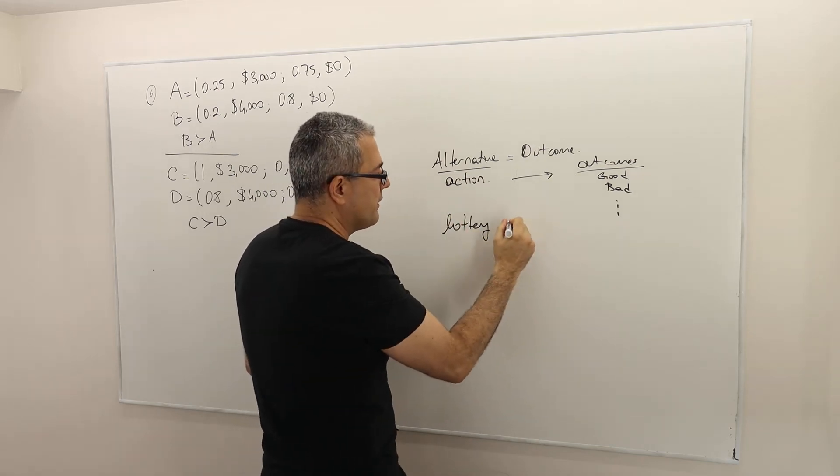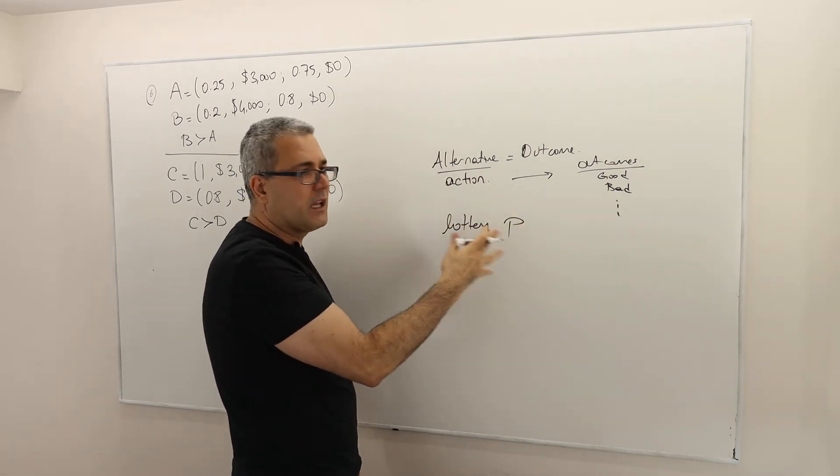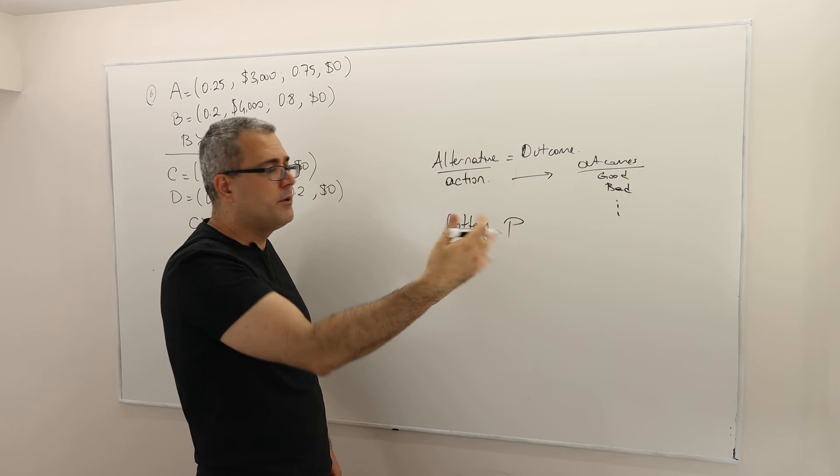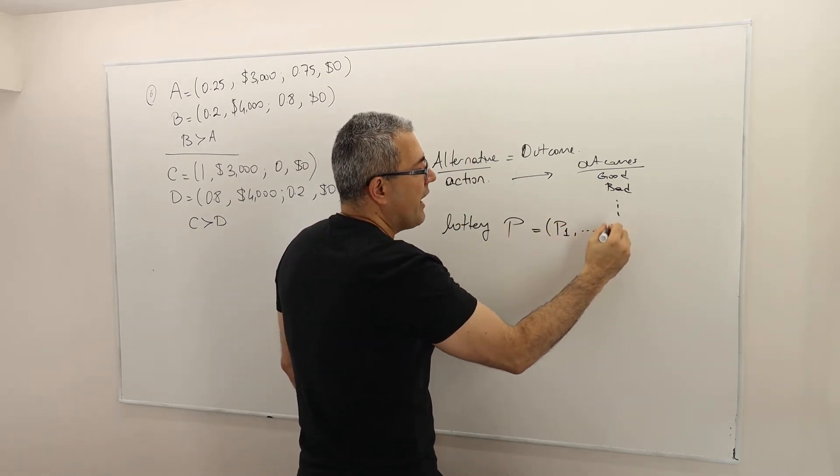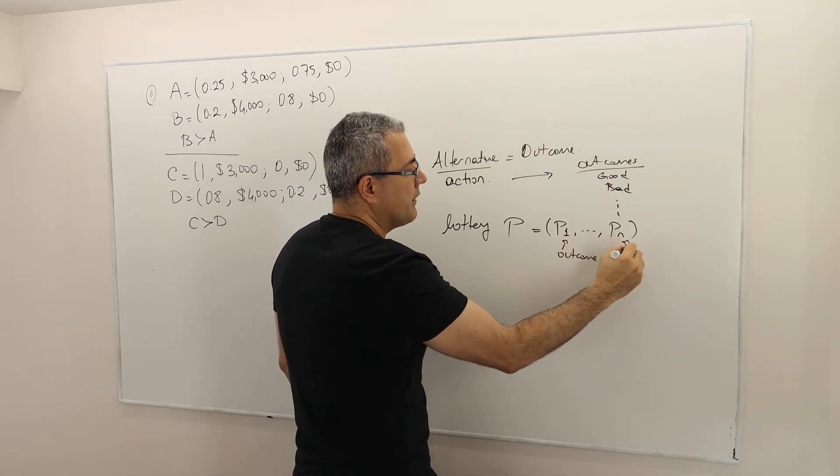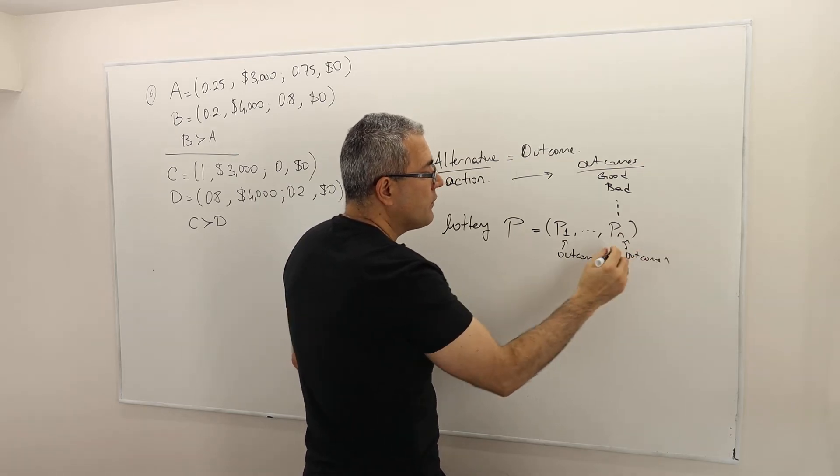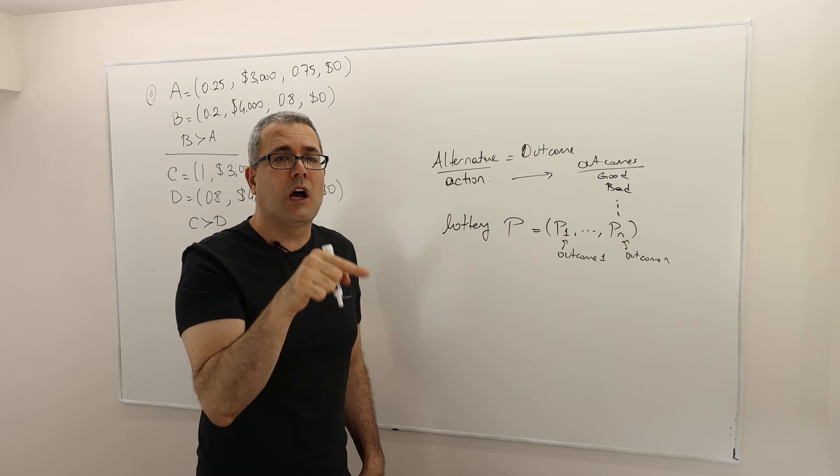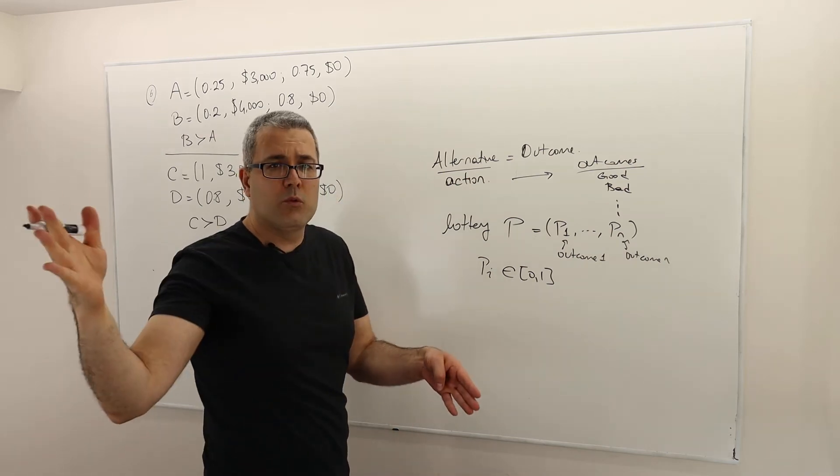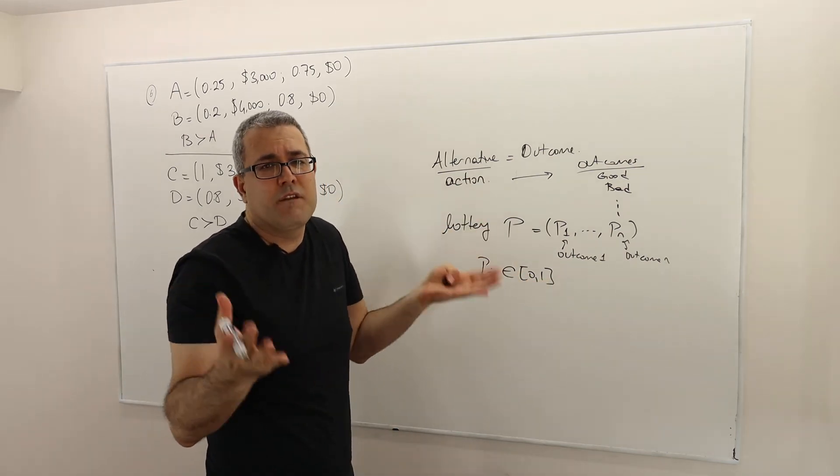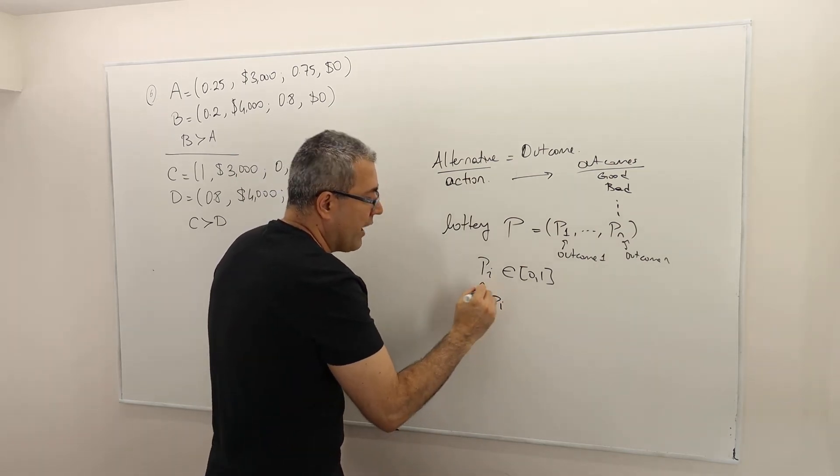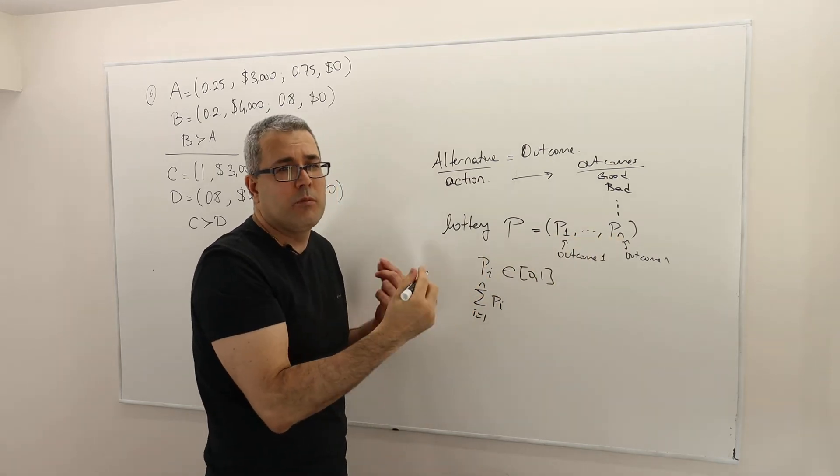So the formalization, again, start with the lottery. So in a very simple environment, we call or we denote lottery something like P. We're going to use P a lot to denote probability. But again, lottery is a probability distribution over outcomes. So assuming that we have N outcomes, outcome one, for example, and this corresponds to outcome N. So these are probabilities that each outcome will occur. So each P_i is, in fact, a number in between zero and one. So they can't be more than one. They can't be less than zero. So that's the definition of probability.